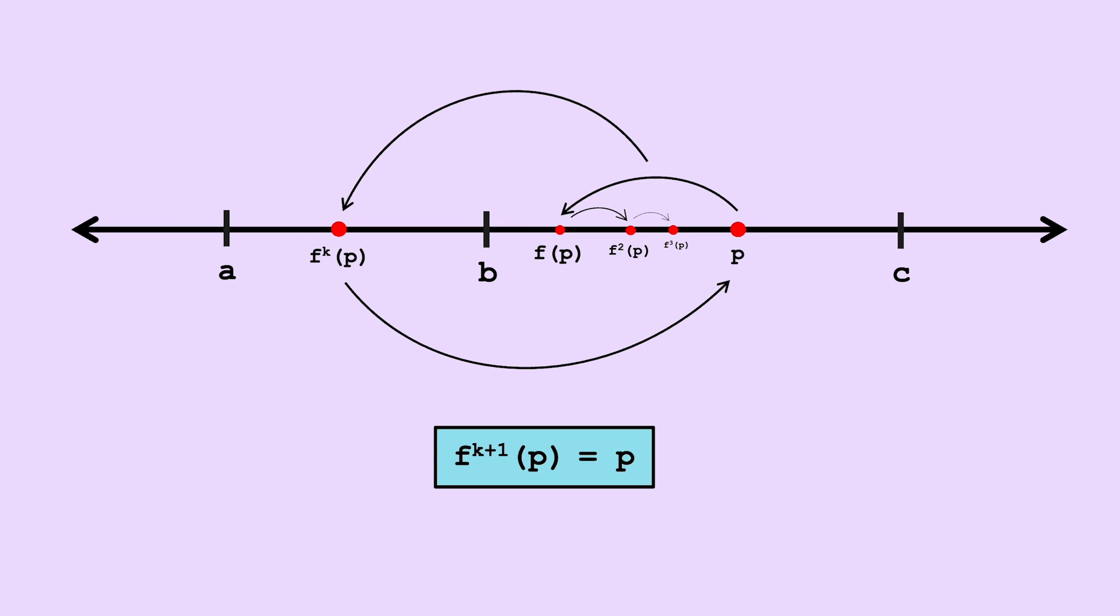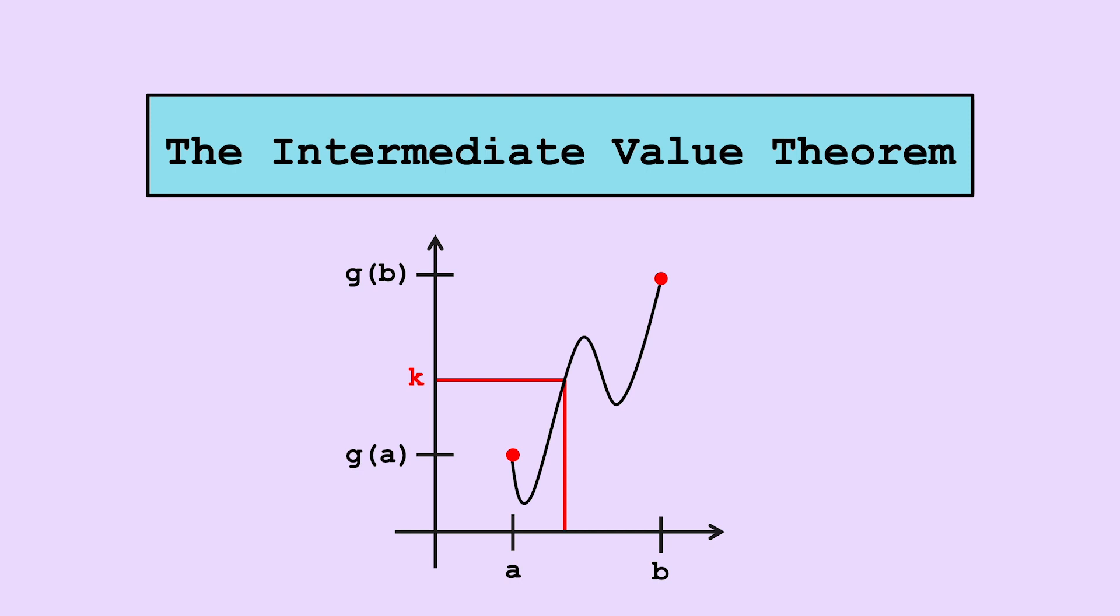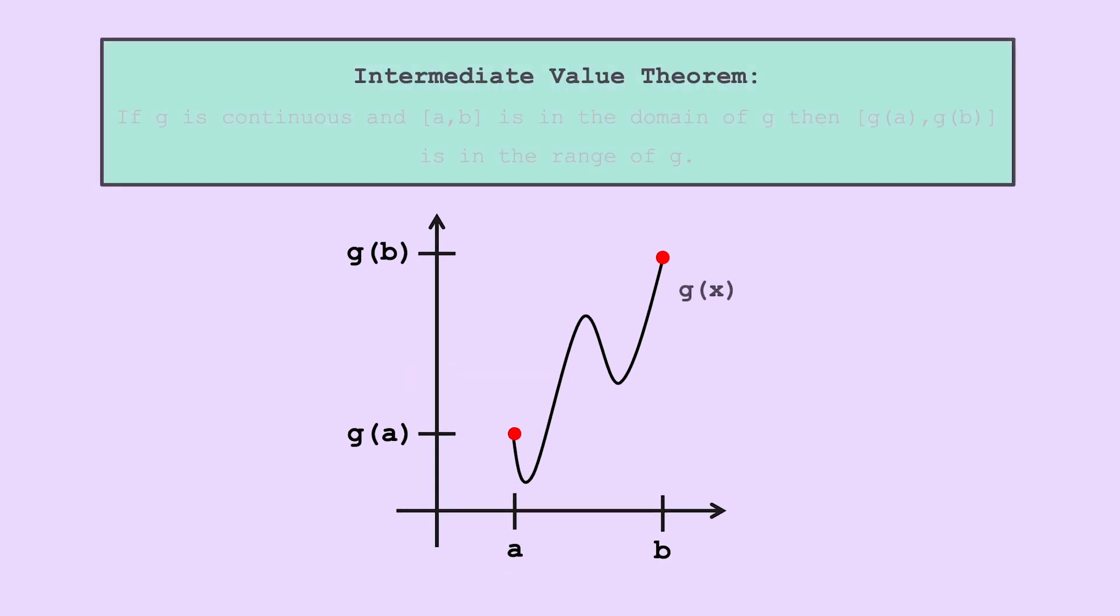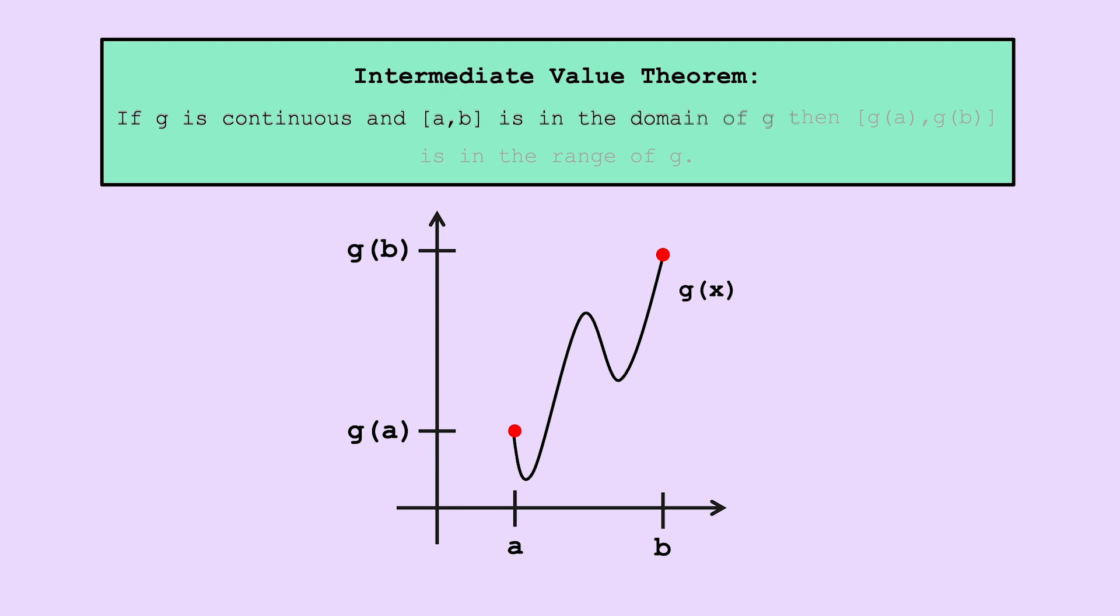However, to make this a bit more rigorous, let's take a deeper look at the intermediate value theorem. You've probably encountered this theorem before, but as a brief recap, recall that the intermediate value theorem says that if g is a continuous function and an interval ab is in the domain of g, then the interval g of a to g of b is in the range of g. In other words, for any k between g of a and g of b, the line y equal k necessarily crosses g. This theorem may seem so obvious it seems hardly worth stating, but when taken out of context, its implications become more subtle.